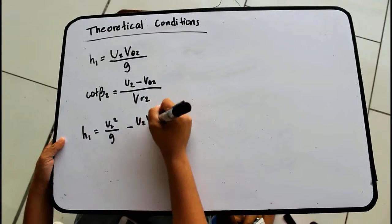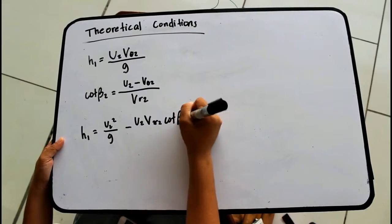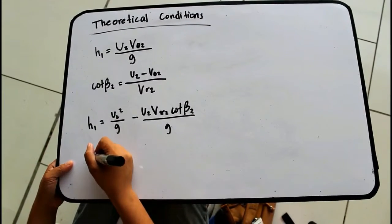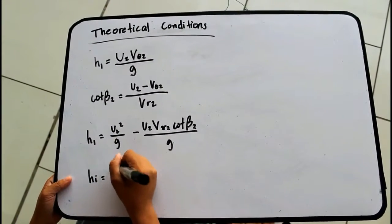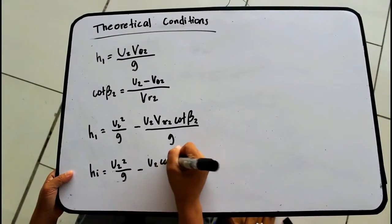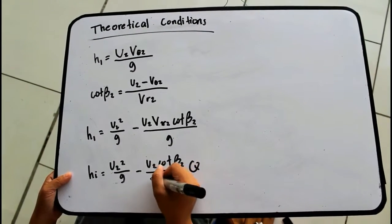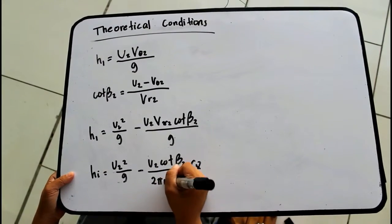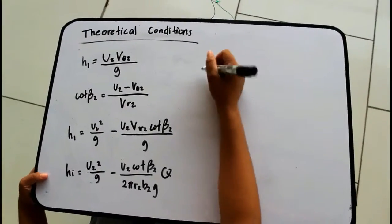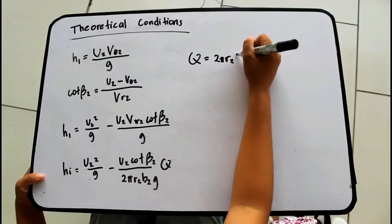...minus U2 times V-theta-2 times cot beta-2 over g. The next formula is: Hi equals U2 squared over g minus U2 times cot beta-2 over 2 pi r2 squared times g times Q. And solving for Q: Q equals 2 pi r2 times V2 times Vr2.